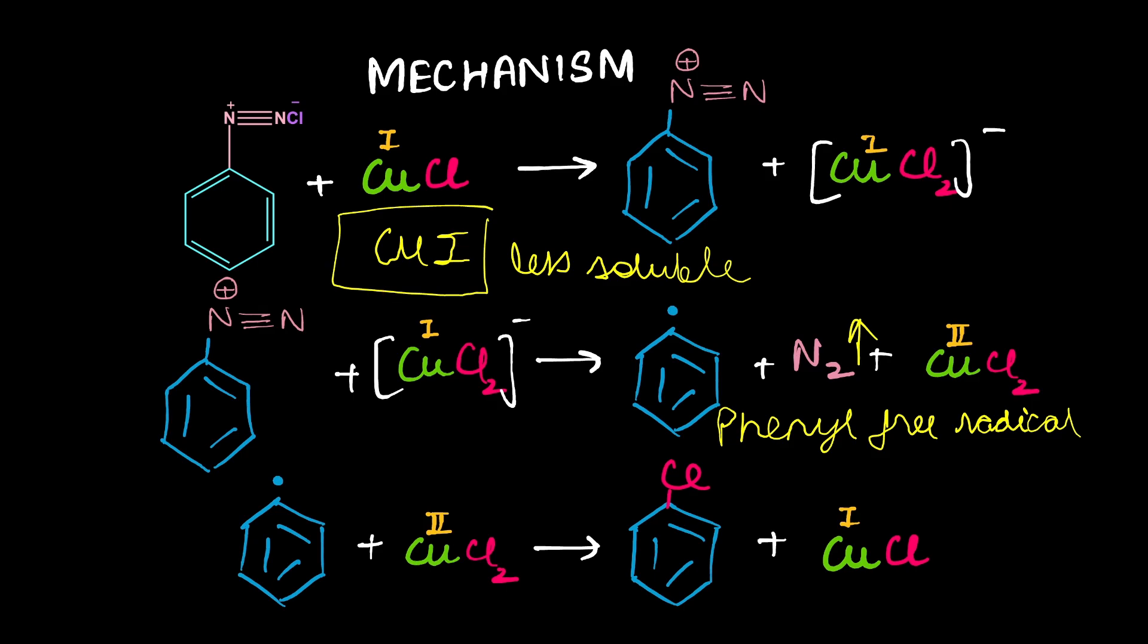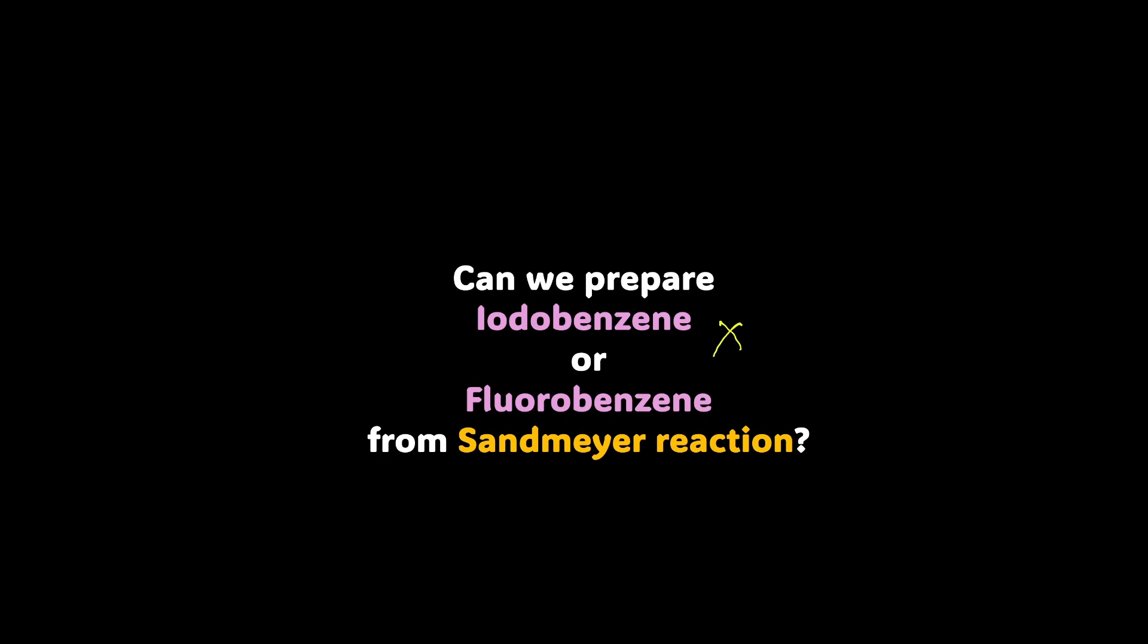Now, talking about the formation of fluorobenzene, let's think of CuF. This is also very less soluble and for the mechanism to proceed efficiently, we want copper +1 in solution to donate an electron and there is an additional problem. This complex that needs to be formed, CuF2-, cannot be formed, it doesn't get formed. So no proper redox cycle or aryl radical formation can take place, hence no fluorobenzene. It seems that the aryl halide which is possible from this mechanism is only chlorobenzene and bromobenzene, not iodobenzene and fluorobenzene.